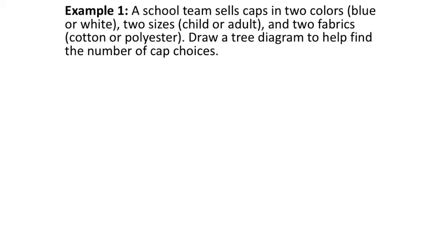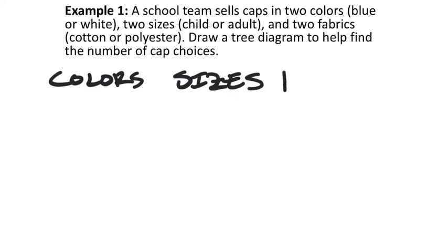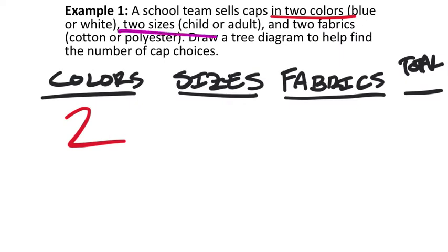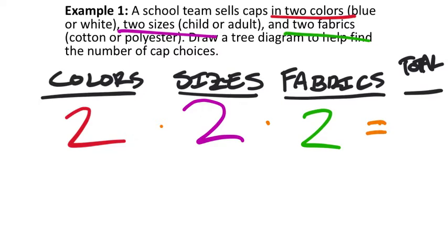We're not actually going to draw the tree on this one. A school team sells caps in two colors, two sizes, and two fabrics — three different categories. Using the Fundamental Counting Principle, the total number of outcomes is 2 times 2 times 2, which gives eight different outcomes.